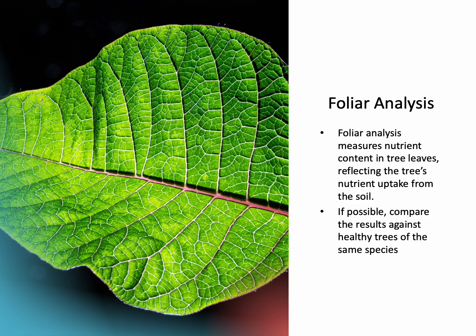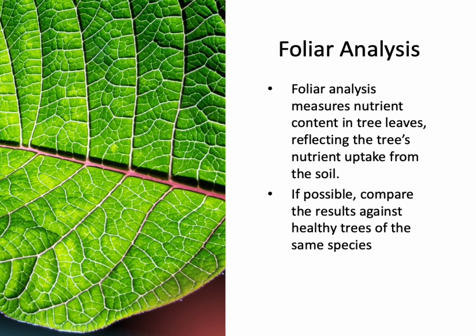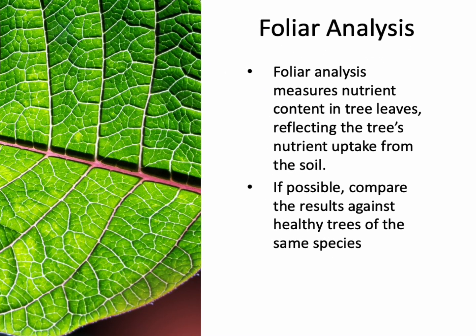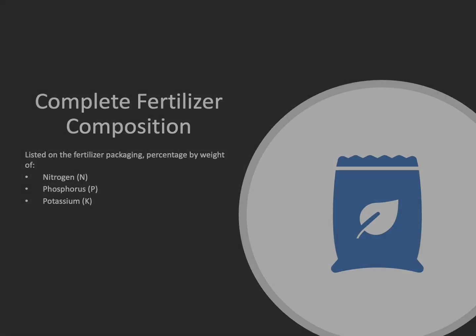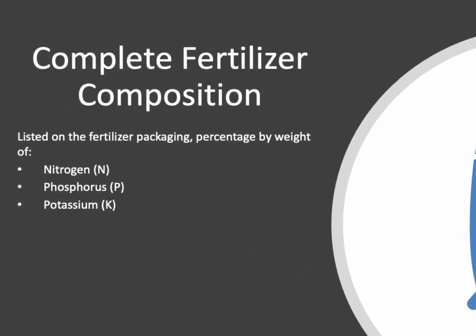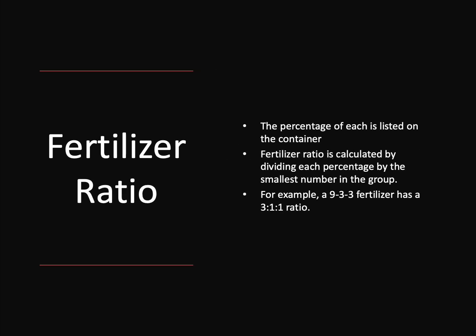Foliar analysis measures nutrient content in the leaves and helps assess how well trees acquire and use soil nutrients. Combining soil and foliar analysis provides a more complete picture. A complete fertilizer contains nitrogen, phosphorus, and potassium — NPK. For example, a fertilizer labeled 10-2-4 is 10% nitrogen, 2% phosphorus, and 4% potassium. The fertilizer ratio is calculated by dividing each percentage by the smallest number — a 9-3-3 fertilizer has a 3-1-1 ratio.